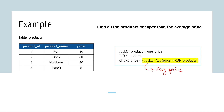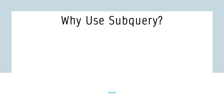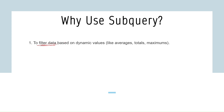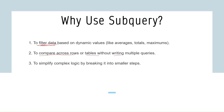Don't worry if that wasn't fully clear — we'll cover more examples later. Subqueries are mainly used to filter data based on dynamic values like averages, totals, maximums, and minimums. They are also used to compare across rows or tables without writing multiple queries, and to simplify complex logic by breaking it down into smaller steps.